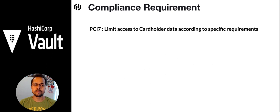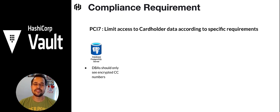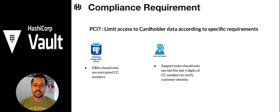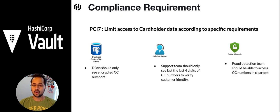The second compliance is PCI 7 — cardholder data should be limited to different teams. Database admins have control over databases but should not be able to see clear credit card information, as that is essentially a data breach point with huge penalties. The support team is very critical in payment industries — things go wrong, payments are reversed, customers have unauthorized activities — but do they really need the whole credit card number? Not really. They only need the last four digits. Audit and forensic teams, however, need access to the full clear text data whenever unauthorized activity occurs.